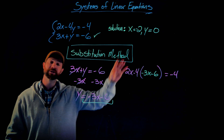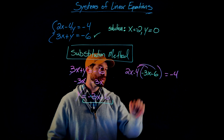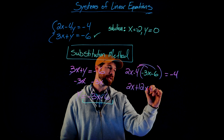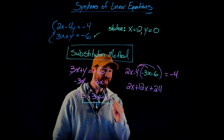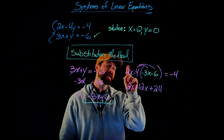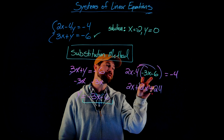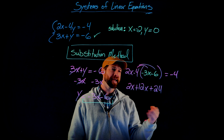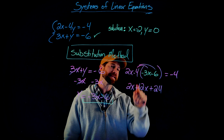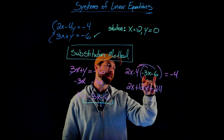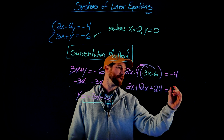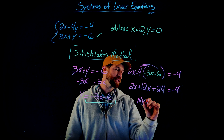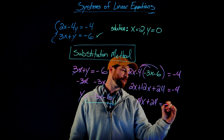I'm going to distribute the negative 4 through the parentheses and solve this equation for x. When I distribute the negative 4, I get 2x plus 12x plus 24. A really common mistake is forgetting that the negative gets distributed through the parentheses. Always make sure you do distribution — that negative 4 is multiplied by both terms. This equals negative 4. Combine like terms to get 14x plus 24 equals negative 4.